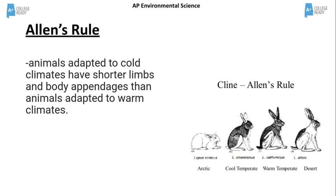The body extremities are shorter in tundra animals. This is Allen's rule: animals adapted to cold climates have shorter limbs and body appendages than animals adapted to warm climates. In the diagram, we see that the ears and legs of the rabbit in the cold climate are shorter than in warmer climates. This helps them to retain heat.